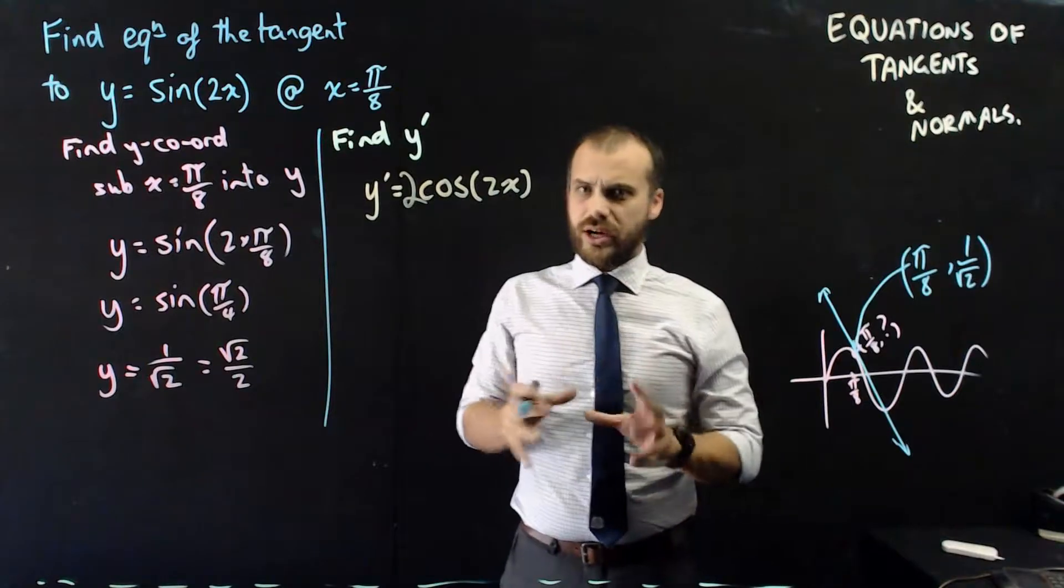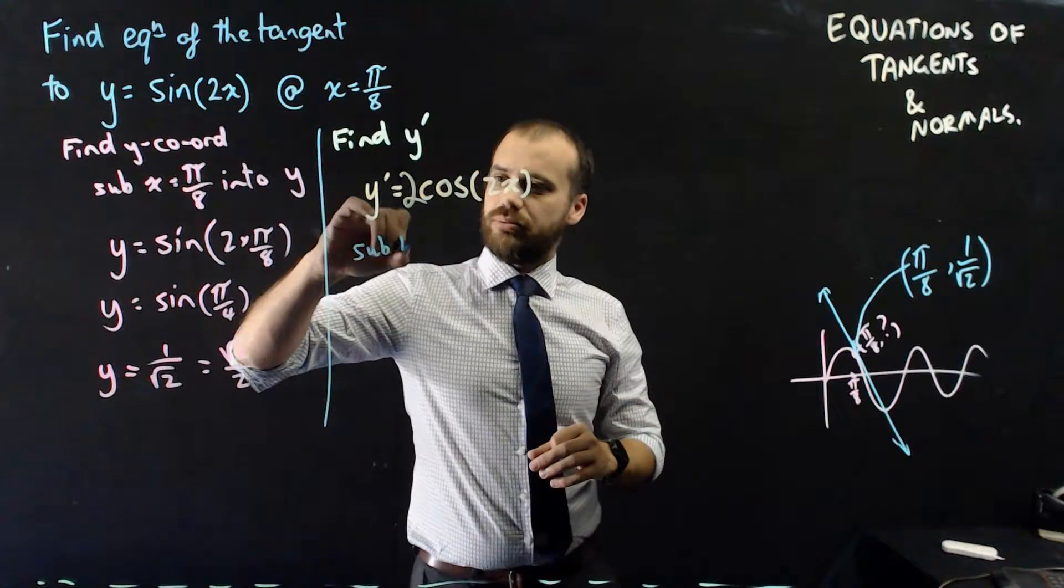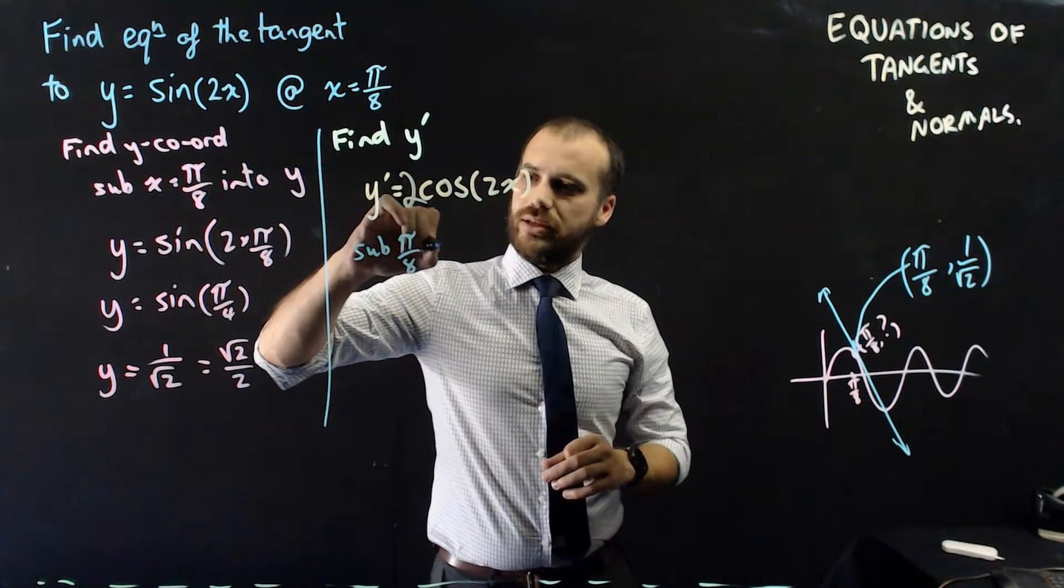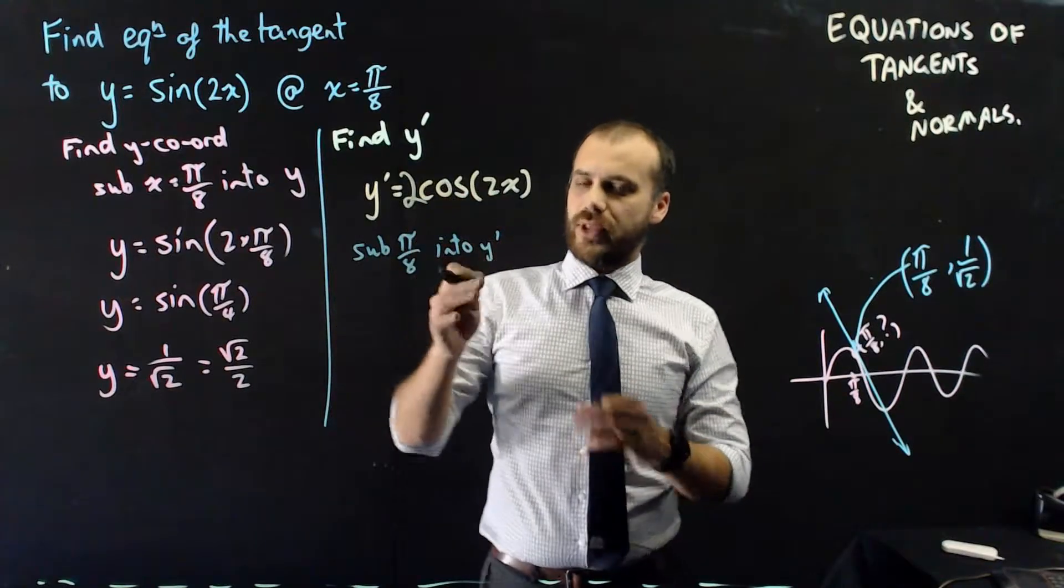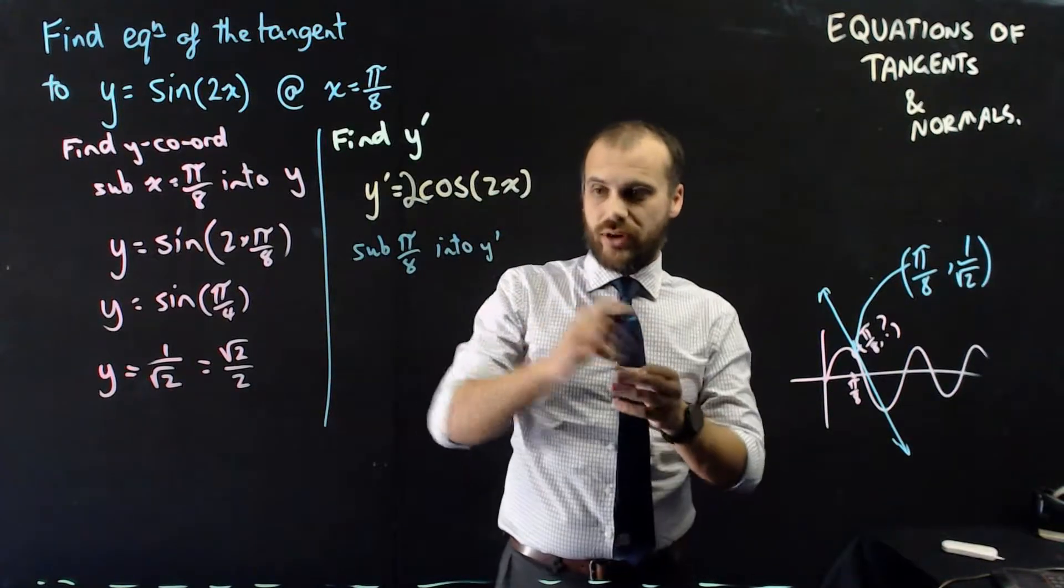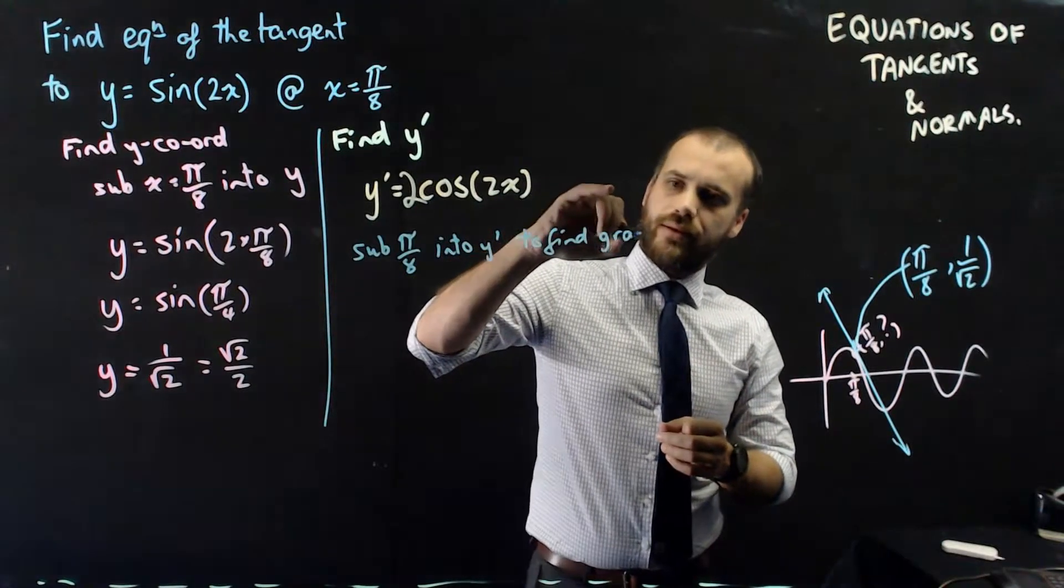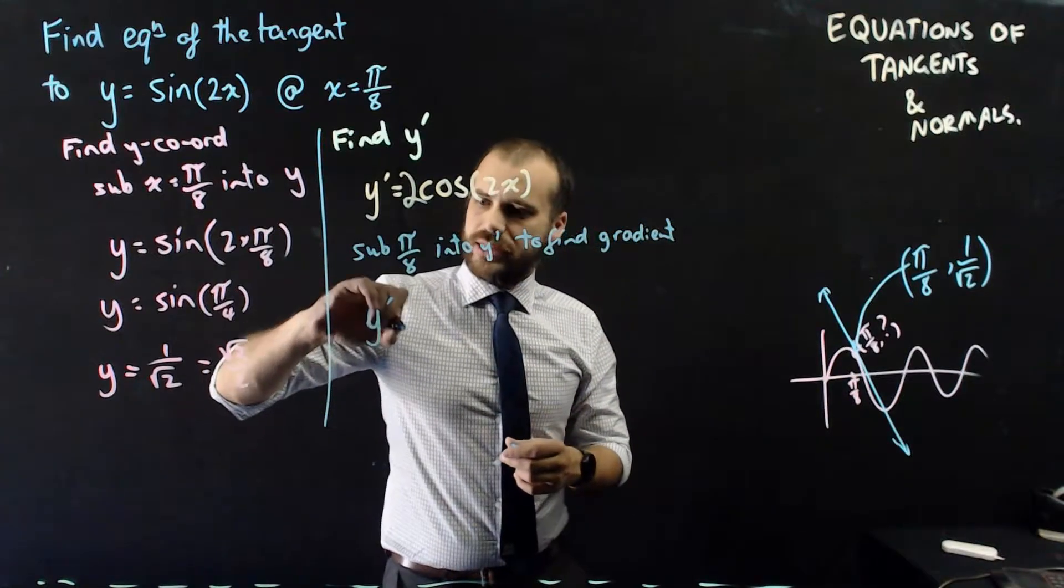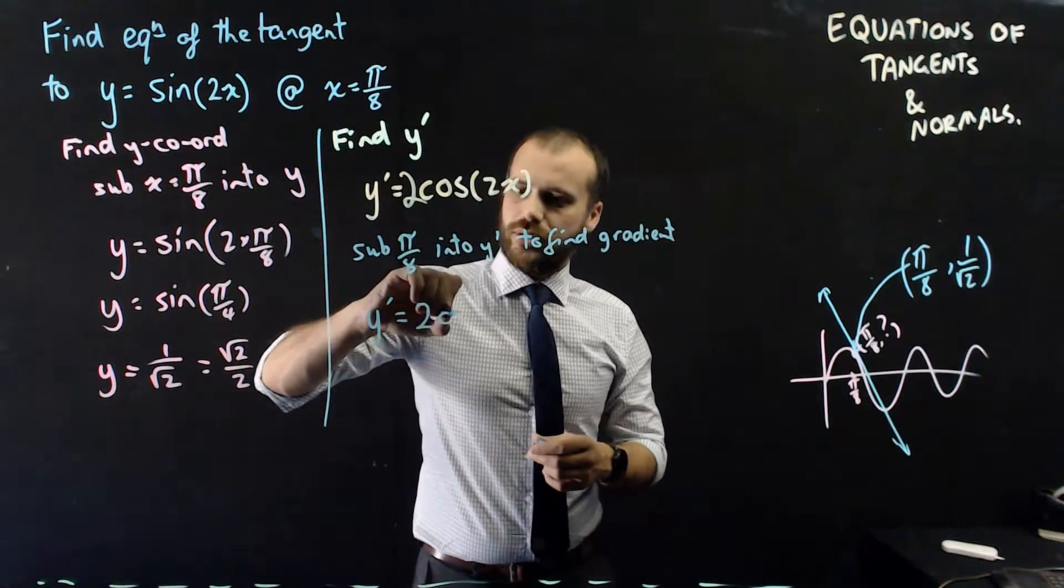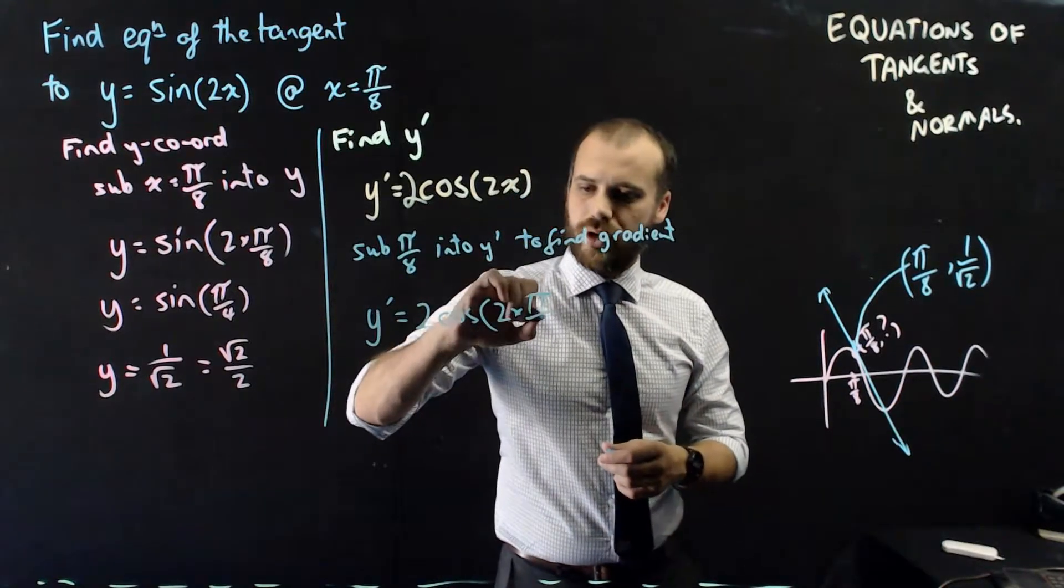I need to know the gradient. So to find the gradient at π on 8, I sub π on 8 into y dash. And I'm doing that to find the gradient at that particular point.